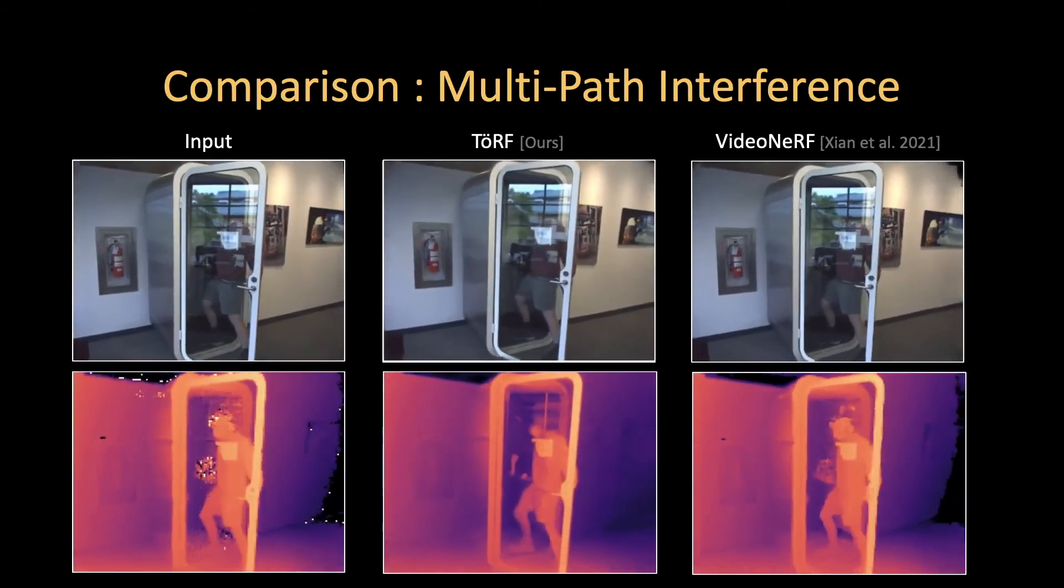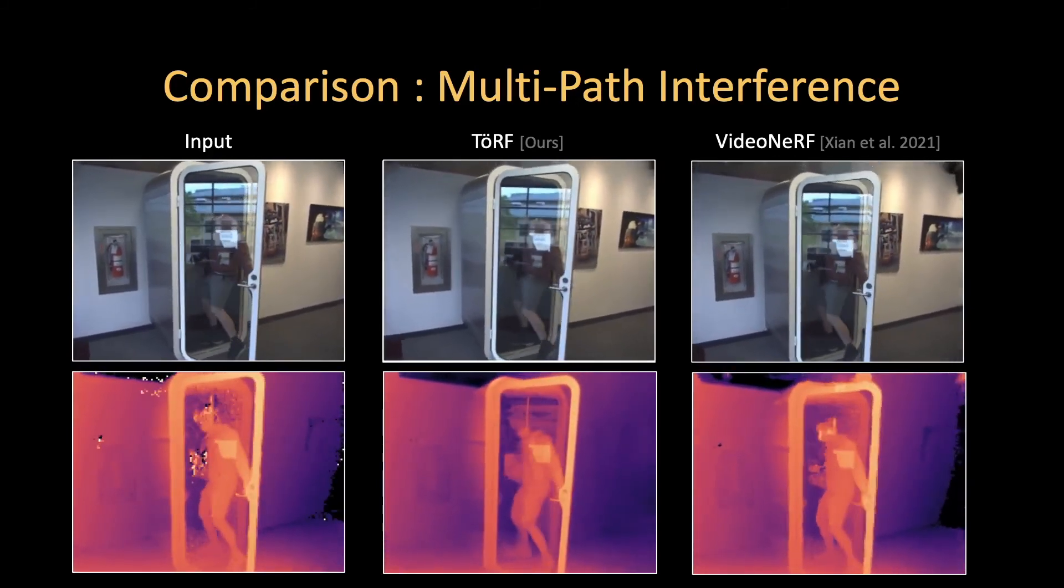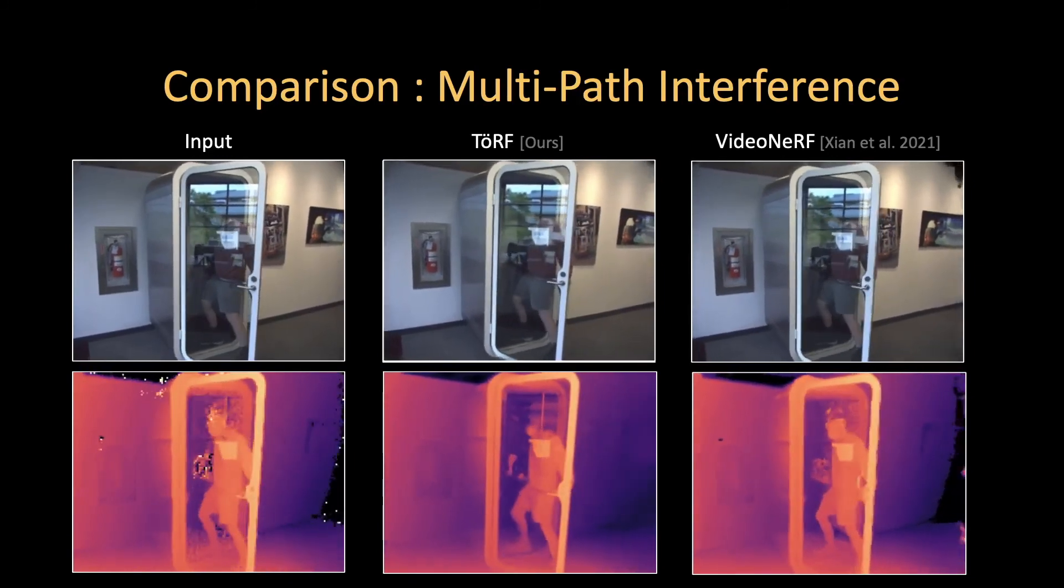Finally, as we model multipath interference, we can recover multiple surfaces that produce these measurements. See, for example, the reflections on the glass of the booth.